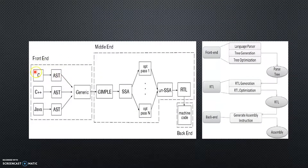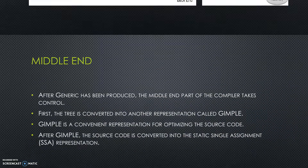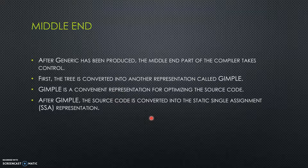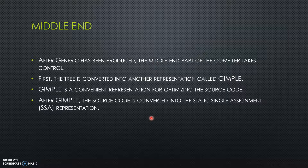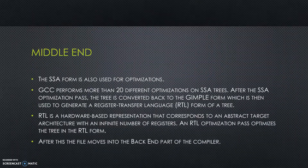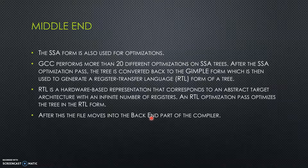The source code in high-level language is converted to AST, which is then further converted to a Generic representation. This Generic representation is sent over to the middle-end. The middle part of the compiler converts the Generic representation into another representation called GIMPL, which is a convenient representation for optimizing the source code. The GIMPL representation is then further modified and converted into an SSA representation, which stands for Static Single Assignment. The SSA form is used for optimizations, and GCC performs more than 20 different optimizations on SSA trees.